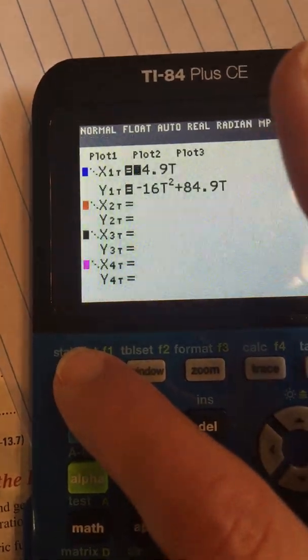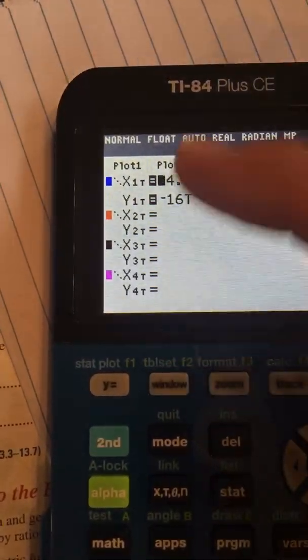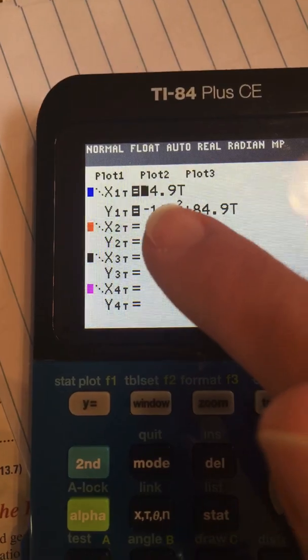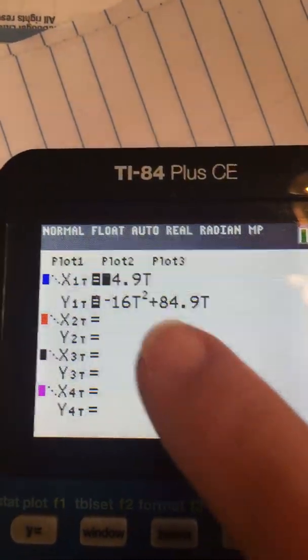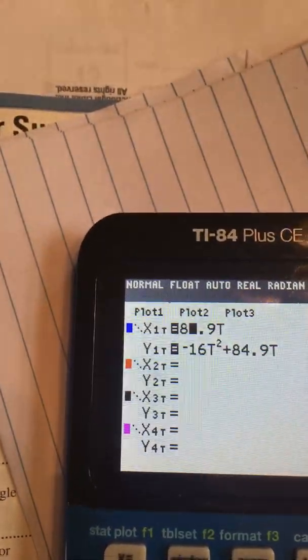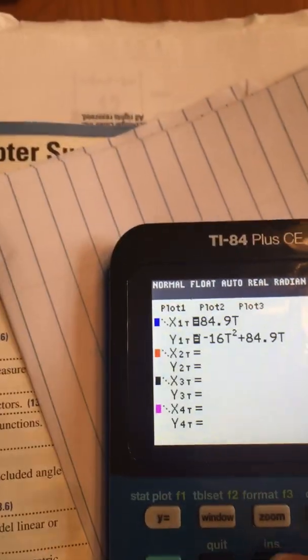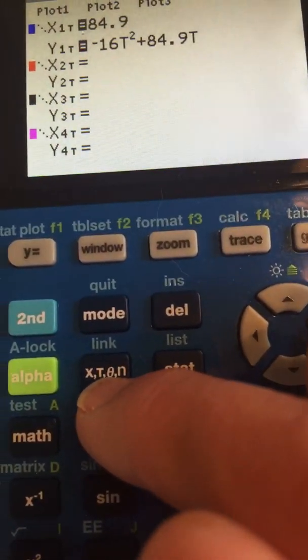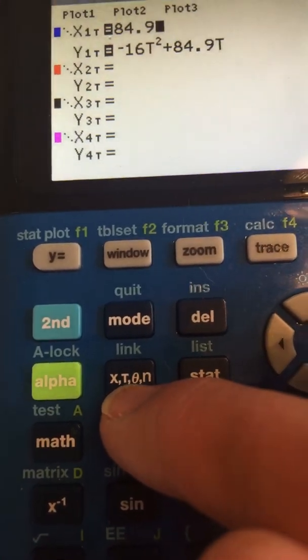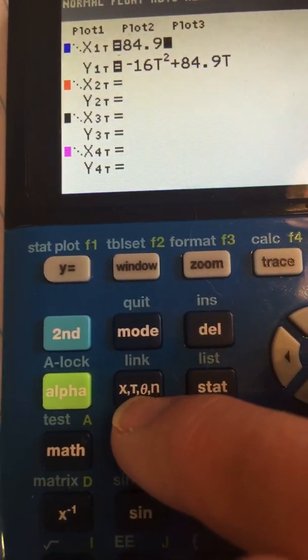Now, when you go to your Y equals, you get this weird looking thing and we're going to put in our formula. So our first one is X equals 84.9T. And notice how I put in T, I'm going to delete that to show you, you just use your X button.